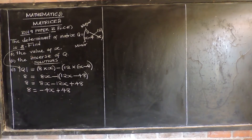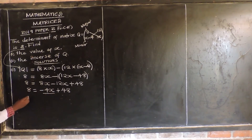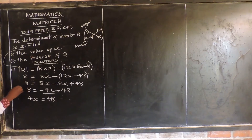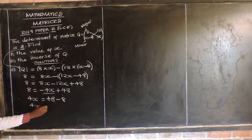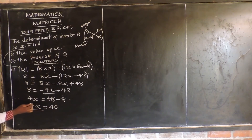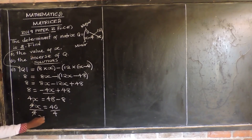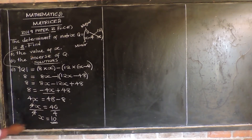Collecting like terms: 8X minus 12X gives negative 4X. So 8 equals negative 4X plus 48. Transposing: positive 4X equals 48 minus 8, which gives 40. Dividing both sides by the coefficient of X, which is 4: X equals 40 over 4, which equals 10. So X is equal to 10.